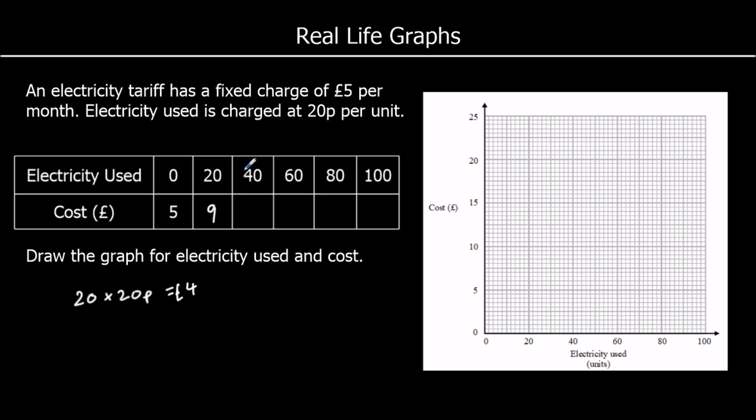For 40 units, 40 times 20p is going to be £8. It's going to be double, 20 lots of 20p. Plus the £5 fixed charge, so that's £13. 60 lots of 20p. 6 times 2 is 12, so it's going to be £12. Plus the £5 fixed charge, so £17. And we can see this is going up by 4 every time. So we're going to have 21 and 25.